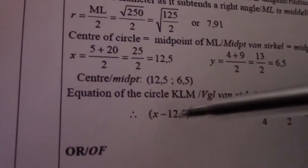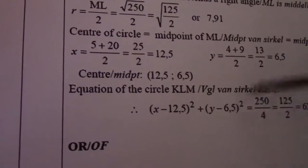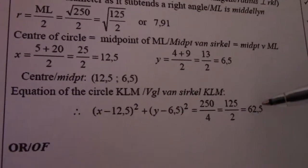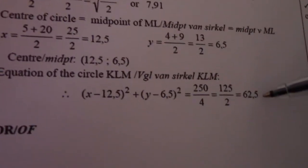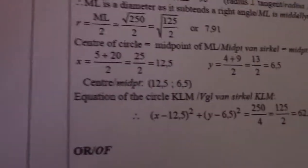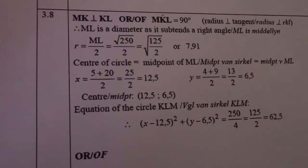So the equation of the circle then: x minus 12.5 squared plus y minus 6.5 squared equals 7.91 squared, which then gives me 62.5. So hope you follow, hope you understand. All the best. God bless. Bye.